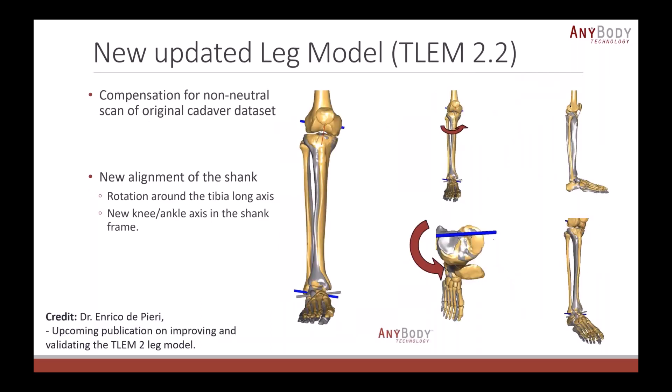There's also huge updates to the main leg model we use in AnyBody, which is based on the TLEM lower extremity model. We have given the TLEM lower extremity model a new version number, we now call it 2.2. It has an update to the way the shank is positioned in the model. We realized there are some drawbacks about how the shank was positioned in the neutral position, probably because of the non-neutral scan of the original cadaver set. Basically, it's a realignment of the shank along its own long axis. This means there is a new knee axis in the shank frame and a new ankle axis. Much of this work I would like to credit to Dr. Enrico Di Pieri, who has been the driver behind this. He's working on a publication on improving and validating the TLM2 leg model.